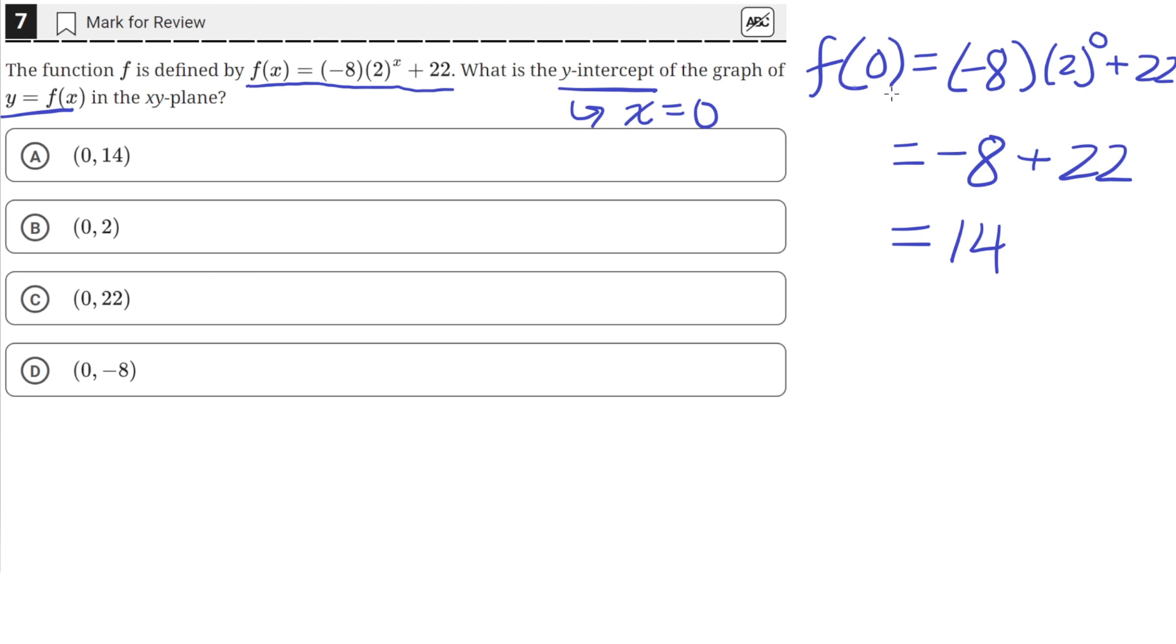So at a value of x equals 0, the y value is 14. So this is the y-intercept of this graph. This is where the graph crosses the y-axis, which is answer choice A.